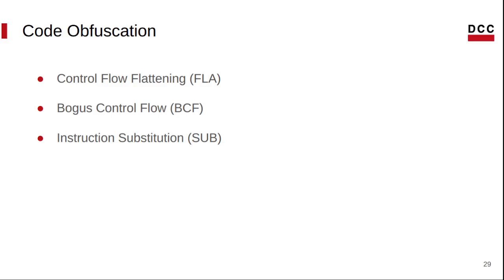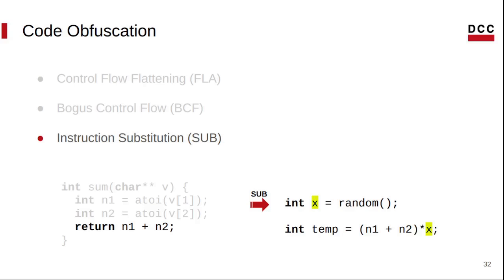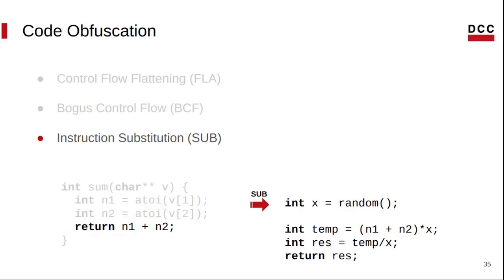We also have the instruction substitution technique that is able to replace logic and arithmetic instructions with sequences of commands that are semantically equivalent. Let us consider this program that adds two numbers again. If we apply instruction substitution in this arithmetic operation, we can generate a random integer x and use it to multiply the sum obtained from the previous operation. This substitution is not semantically equivalent yet, but if you divide the result of the variable temp by the value of the random variable x, we are able to reproduce the same value of the original instruction of the program. Now we return this value, and the program generated by the instruction substitution technique is semantically equivalent.